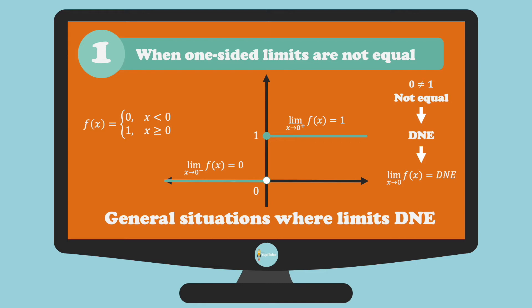DNE means does not exist. So whenever you see DNE, it means that the limit doesn't exist.